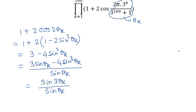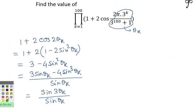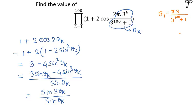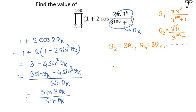Now, looking at the representation of θ_k and putting k equal to 1, 2, 3 and so on: θ_1 equals π · 3 / (3^100 + 1). The power of 3 gradually increases, so θ_2 equals 3·θ_1, θ_3 equals 3·θ_2, and so on. Our problem now becomes the continuous product of sin(3θ_k) / sin(θ_k) where k varies from 1 to 100, and we can see a telescoping product forming.